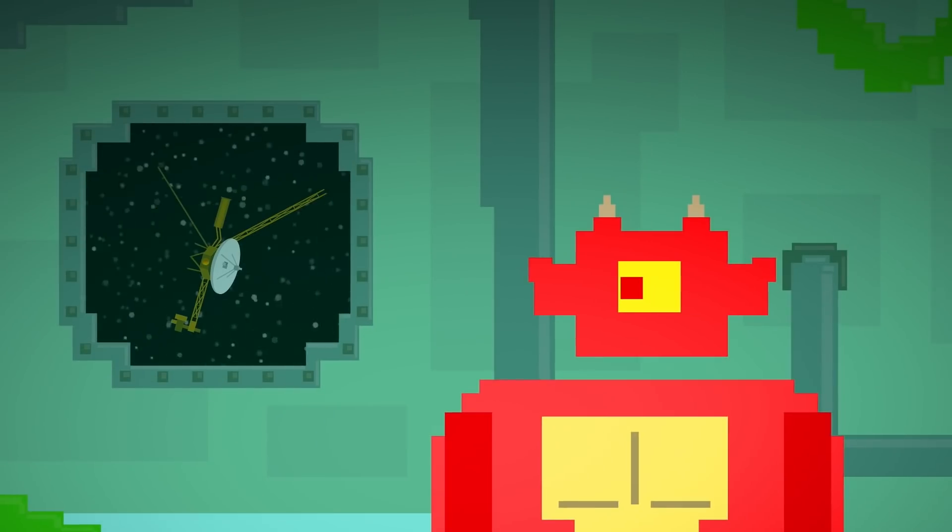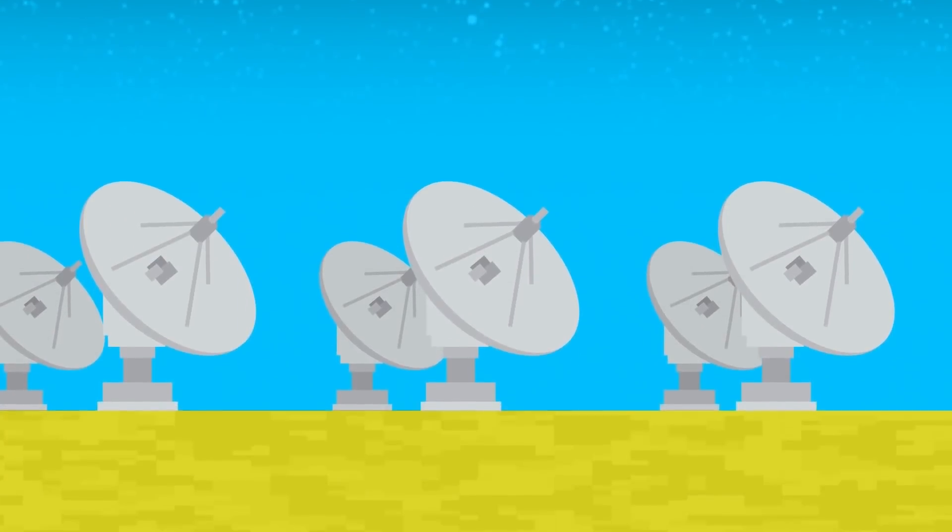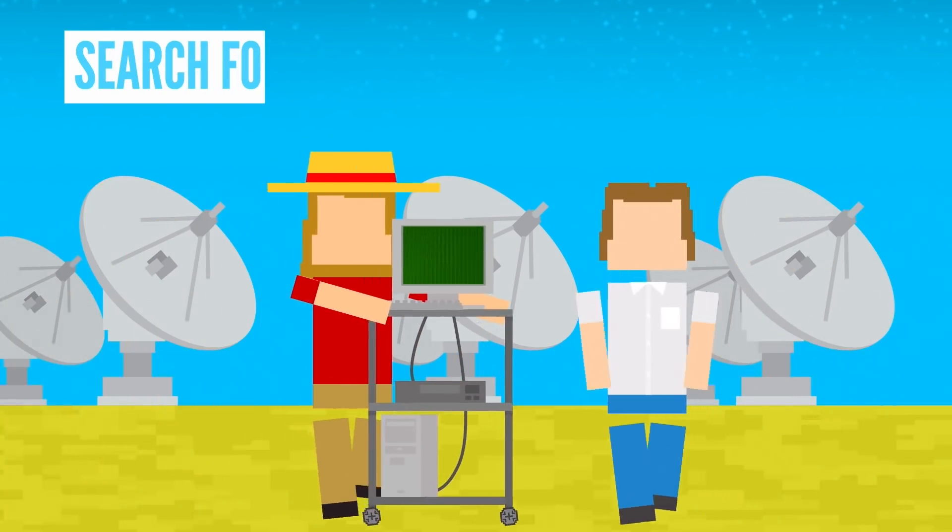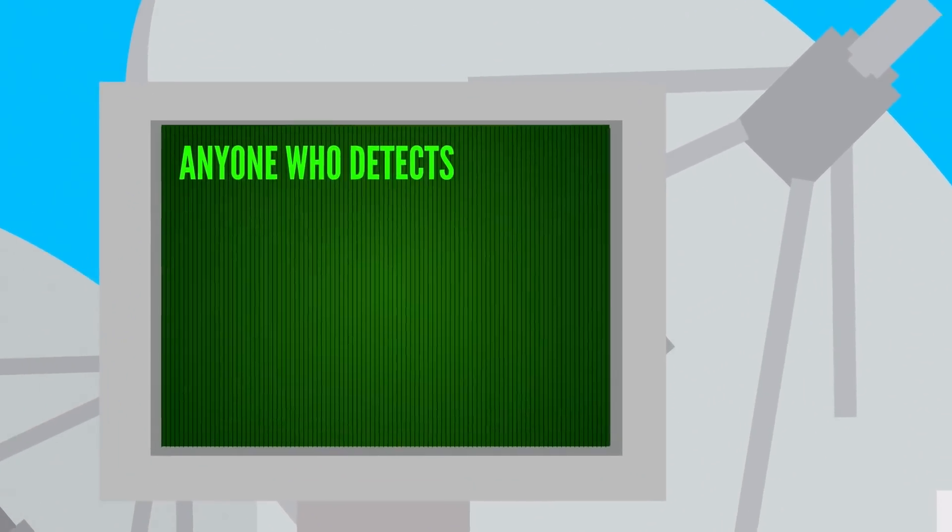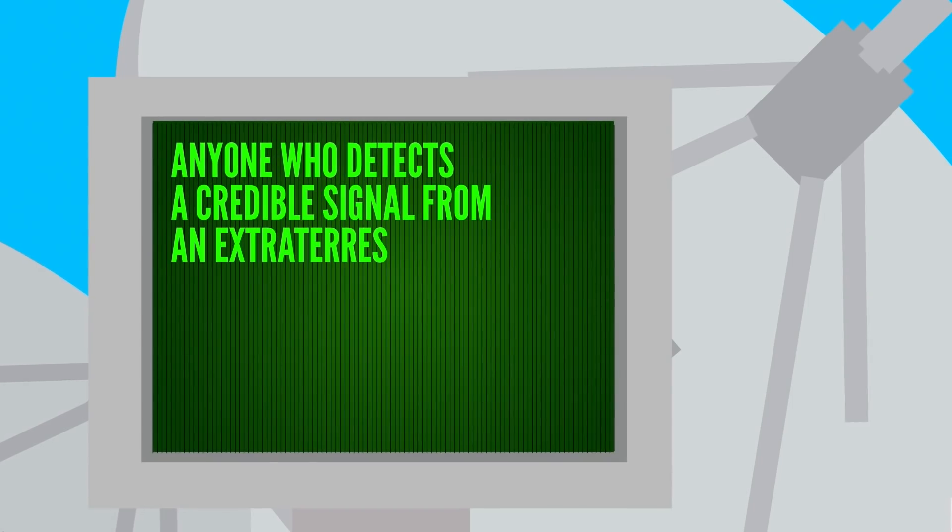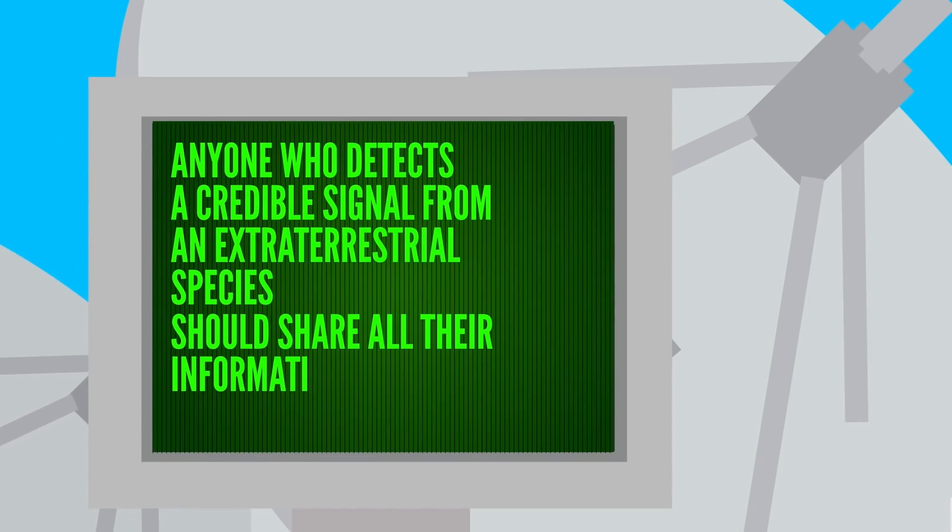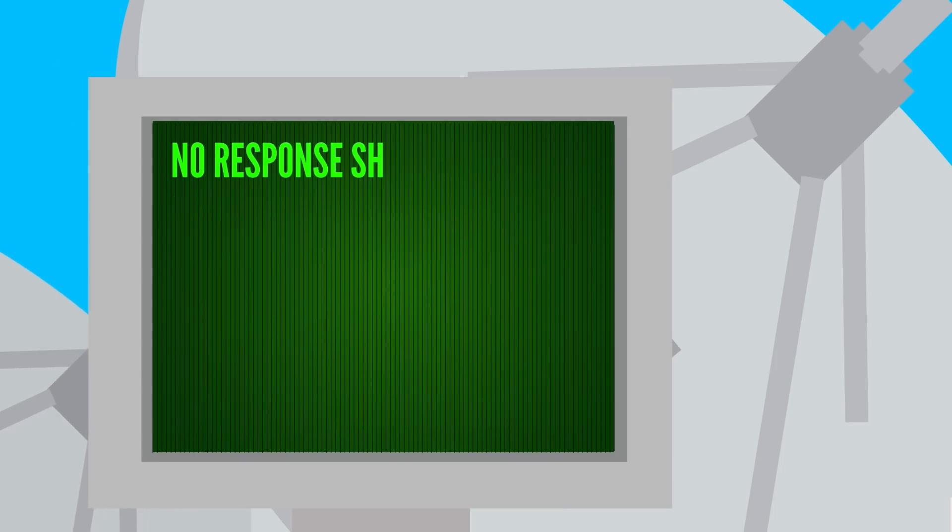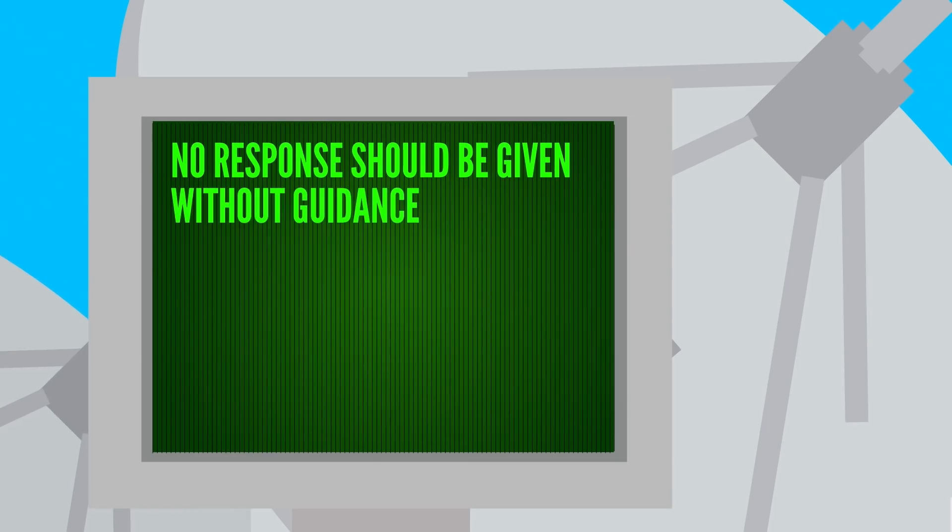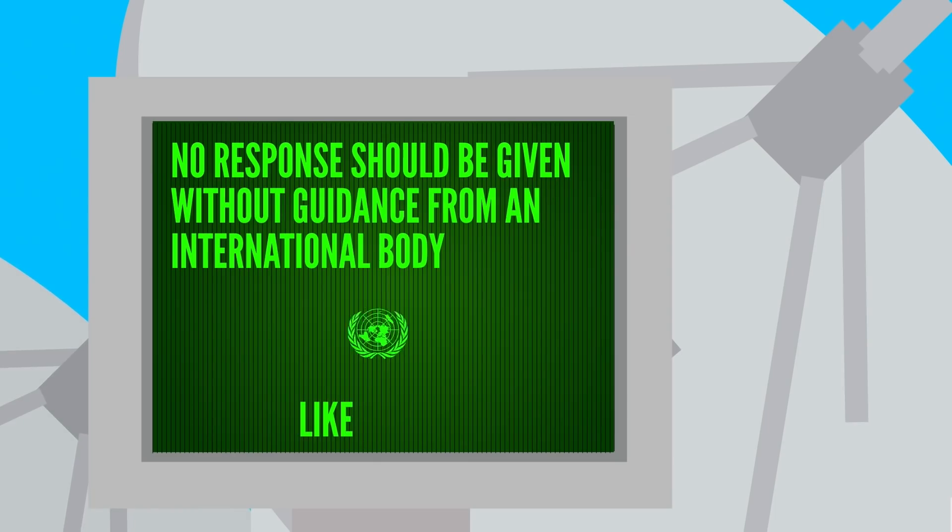But what happens if they return our call? There are some basic protocols developed in the 80s by researchers in the search for extraterrestrial intelligence field. They say that anyone who detects a credible signal from an extraterrestrial species should share all their information with the public and other scientists, and that no response should be given without guidance from an international body like the UN.